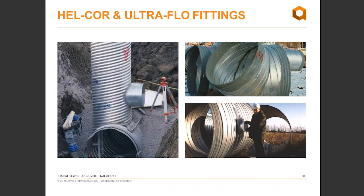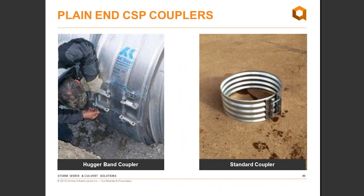A whole range of standard and custom fittings are available for CSP, including tees, elbows, wyes, saddles, branches, and manholes. CSP ends need to be re-rolled to accept the couplers. There is a standard coupler that is soil-tight, and other band coupler systems suited for applications where we want to reduce infiltration and exfiltration, such as detention systems. All couplers are available in the three coatings.